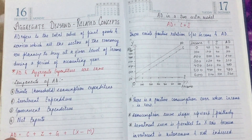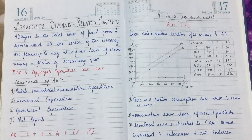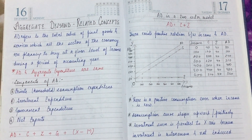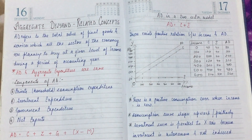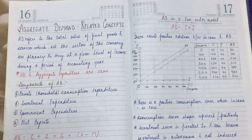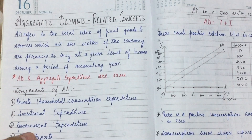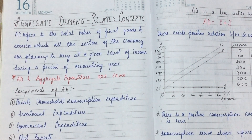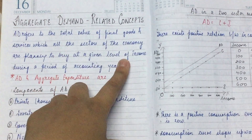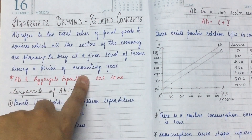We have studied demand in micro. But here we have an aggregate level because this is macroeconomics. Aggregate demand, or AD, refers to the total value of final goods and services which all the sectors of the economy are planning to buy at a given level of income during a period of one accounting year.